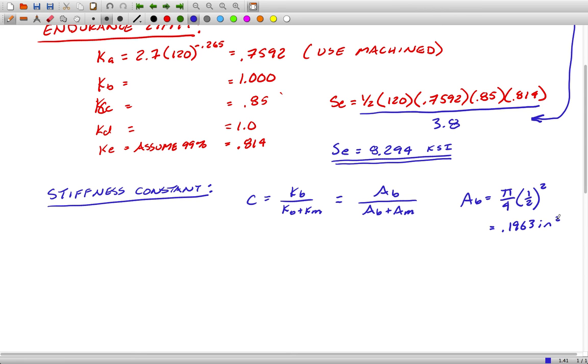Calculating the area of the bolt is trivial. We're going to assume that the bolt is fully threaded right up to the nut, so that's based on the full diameter, which is to say AB is just π over 4 times 1/2 squared, which is 0.1963 squared. Now, the area of the joint, AM or AC, again, kind of C and M are interchangeable between textbooks. We'll call it AC here.